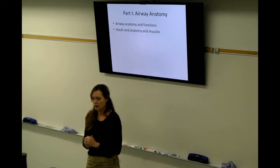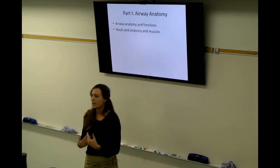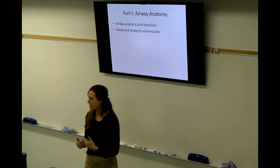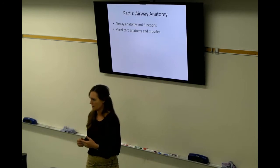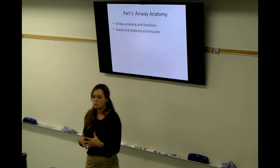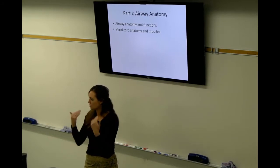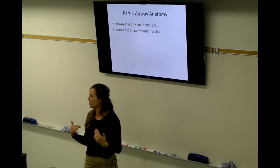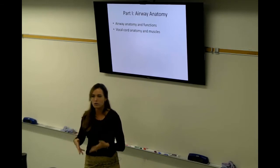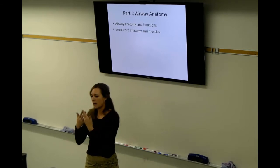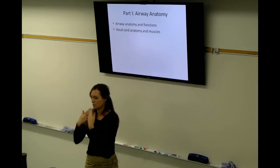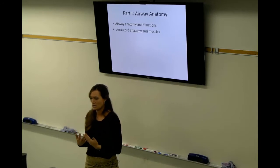We go down from the thyroid cartilage and cricoid cartilage to the trachea. The lining of the trachea is made of pseudostratified columnar ciliated epithelial cells. We have mucus embedded within there, so the cilia and mucus will trap additional airborne debris that made it past your nose and bring it up to the back of our throat, where we either expel it or swallow it.